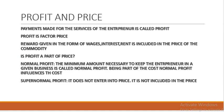The payment made for the use of the services of the entrepreneur is called profit. Profit is a factor price paid to the entrepreneur and it is a positive residue. Rewards to factors of production — wages to labor, interest to capital, rent to land — are included in the price of the commodity. Normal profit is the minimum amount necessary to keep the entrepreneur in a given business, and normal profit is part of the cost of production, so it influences cost and is part of the price. Supernormal profit, however, does not enter into the price.